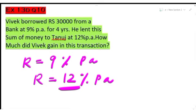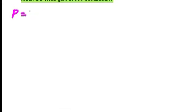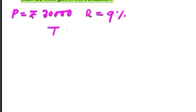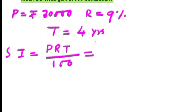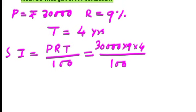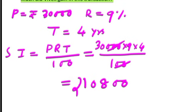In part one: P = 30,000, R = 9%, T = 4 years. Simple interest = PRT/100 = 30,000 × 9 × 4 ÷ 100. After cancelling and simplifying, simple interest in part one equals rupees 10,800.